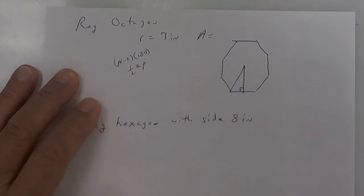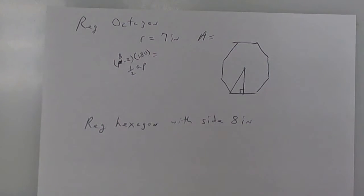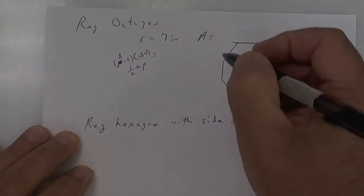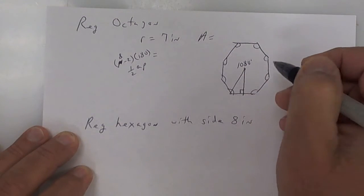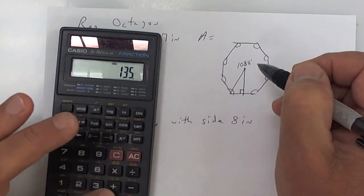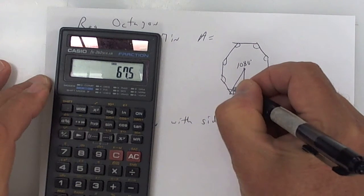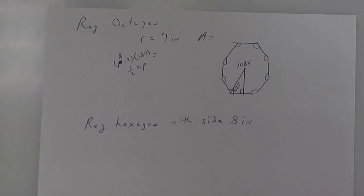This one has eight sides, so put an eight and scratch out the N. It's six times 180, and six times 180 gives me 1080. So all of these interior angles add up to 1080 degrees — you know how a triangle adds up to 180? This one adds up to 1080. Take 1080 and divide by eight and then divide by two. Always divide by two because we're cutting it in half. So this angle is 67.5. The radius is seven, so put a seven for the radius.